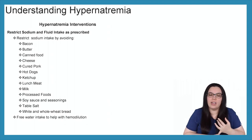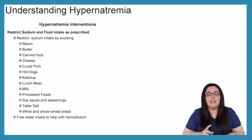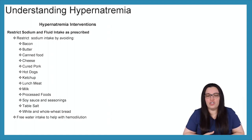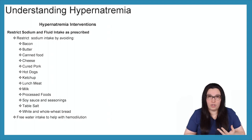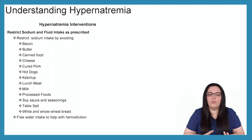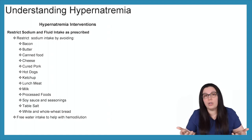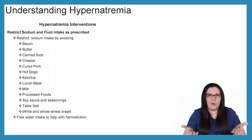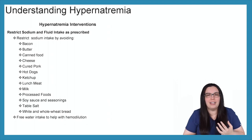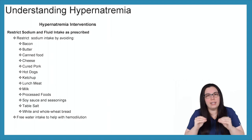We also want to restrict sodium and fluid intake as prescribed — making sure sodium intake is restricted by avoiding foods such as bacon, butter, canned food, cheese, cured pork, hot dogs, ketchup, lunch meats, processed foods, milk, soy sauce, seasonings, table salt, and white or whole wheat breads. Lastly, we want to increase their free water intake to help with hemodilution. If someone doesn't drink a lot of water, we need to increase that intake to hemodilute the hypernatremia and the excess sodium in their blood vessels.